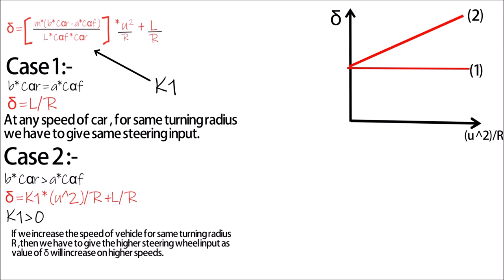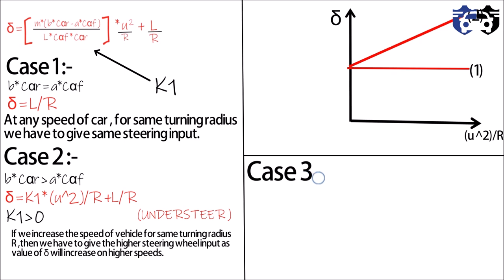Now Case 3 is b*C_alpha_r < a*C_alpha_f. So delta can be written as delta = K1*(u^2/R) + L/R. As K1 is less than zero here, the curve will be decreasing like this.